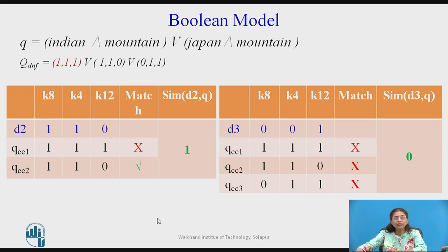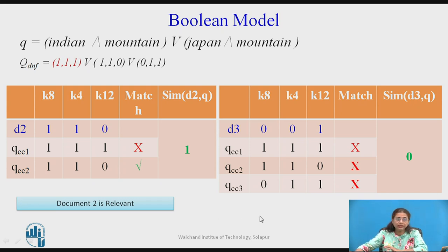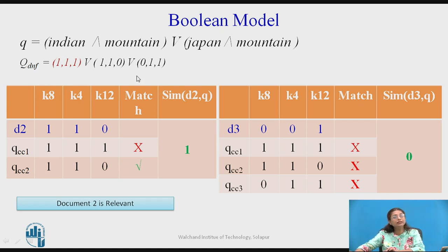What we have obtained is that the only relevant document is D2; the other two documents are not relevant for the given query. In summary: first obtain the document weight vectors — as long as documents are not changed or added, these weight vectors remain unchanged. The only changing part is the query vector. Enter the query, get the DNF, get the weight vector, and try to match it with every component.